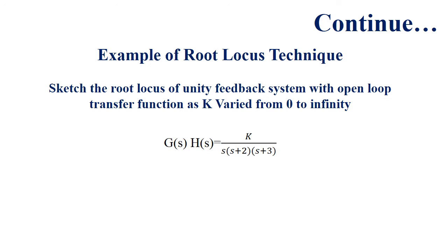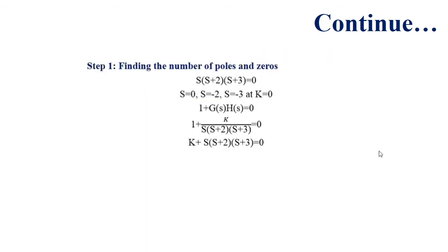An example of root locus technique: sketch the root locus of a unity feedback system with open-loop transfer function G(S)H(S) = K / [S(S+2)(S+3)] as K varies from 0 to infinity. Step 1: there are no zeros and three poles at S=0, S=-2, and S=-3 at K equals to 0. The characteristic equation of the current system follows from this.